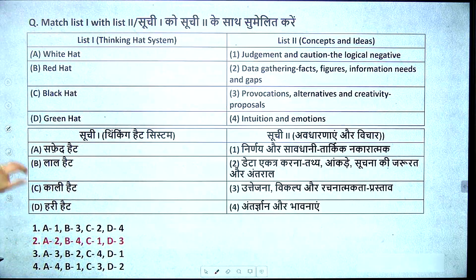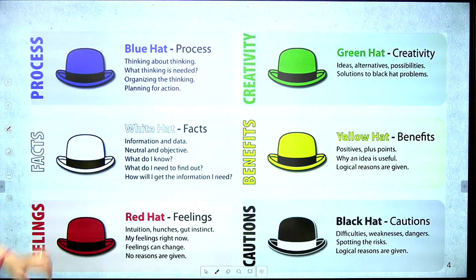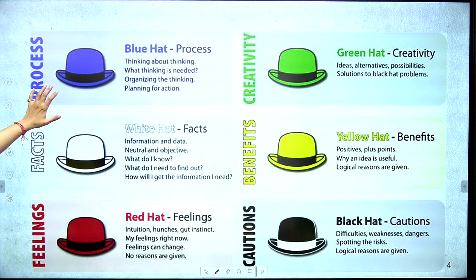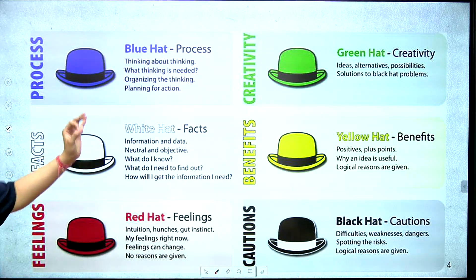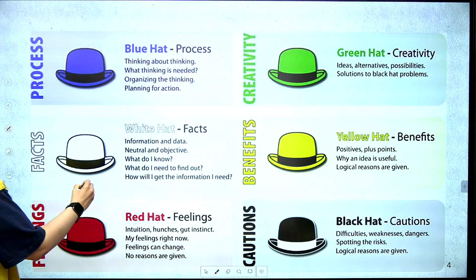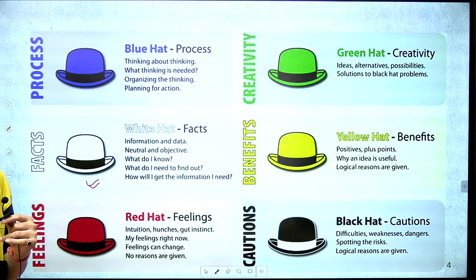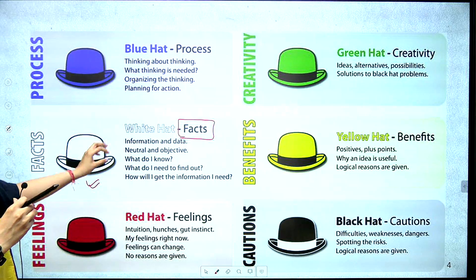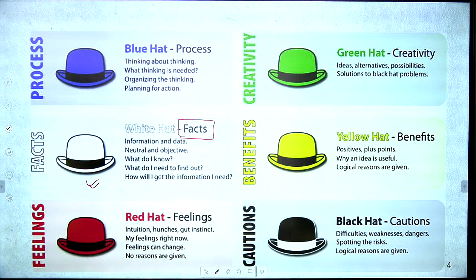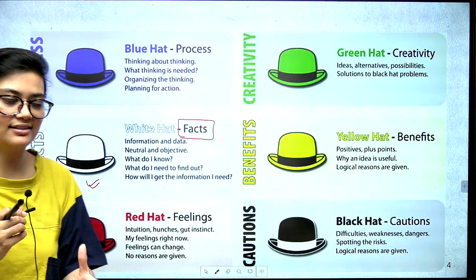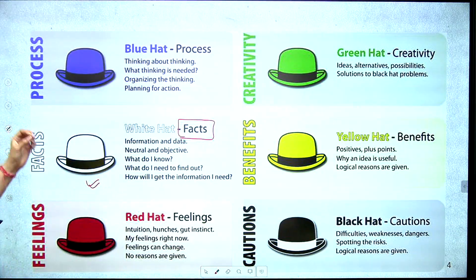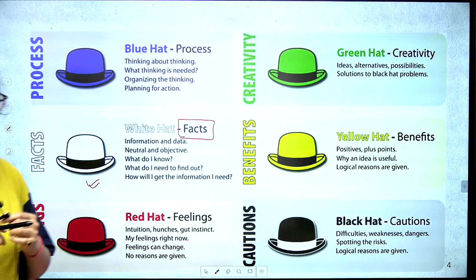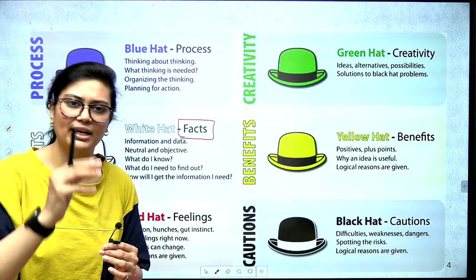We have a total of 6 hats: blue hat, white hat, red hat, black hat, yellow hat, and green hat. If I talk about the white hat first — it represents facts. When we talk about some information or some data, we represent the white hat. Basically, this is a neutral or objective way — what we know, what facts and information we have about something.